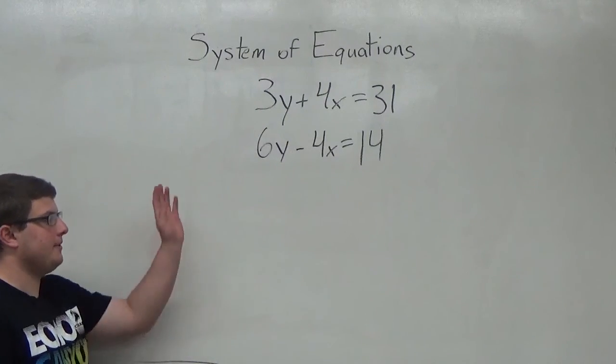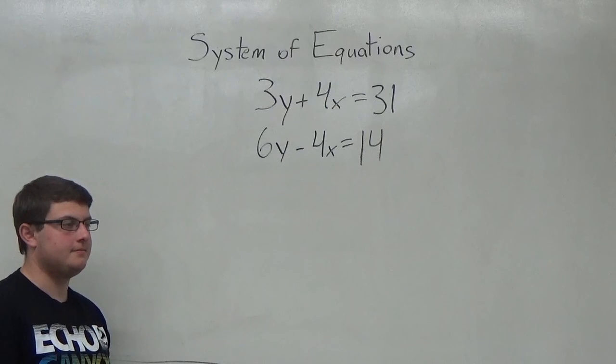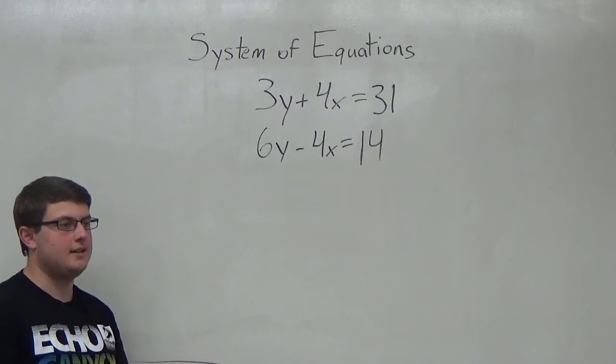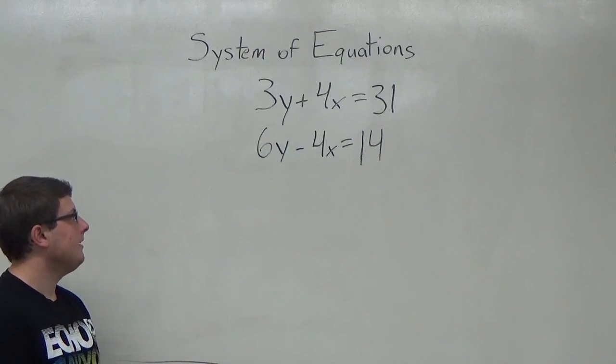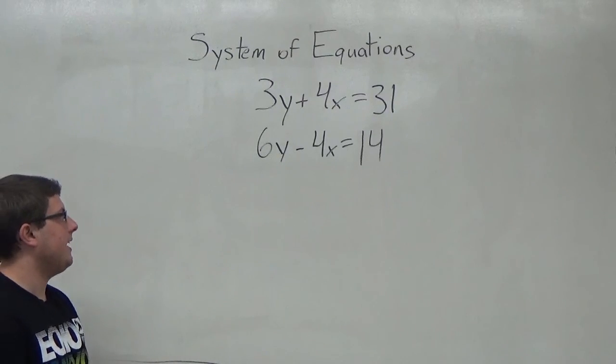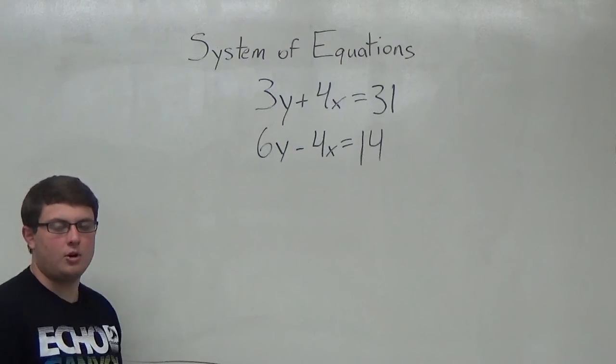But what we can do is manipulate either equation to try and get it so we can either add or subtract the variables to get to zero. What I can see right now is if we divide the second equation all by 2,